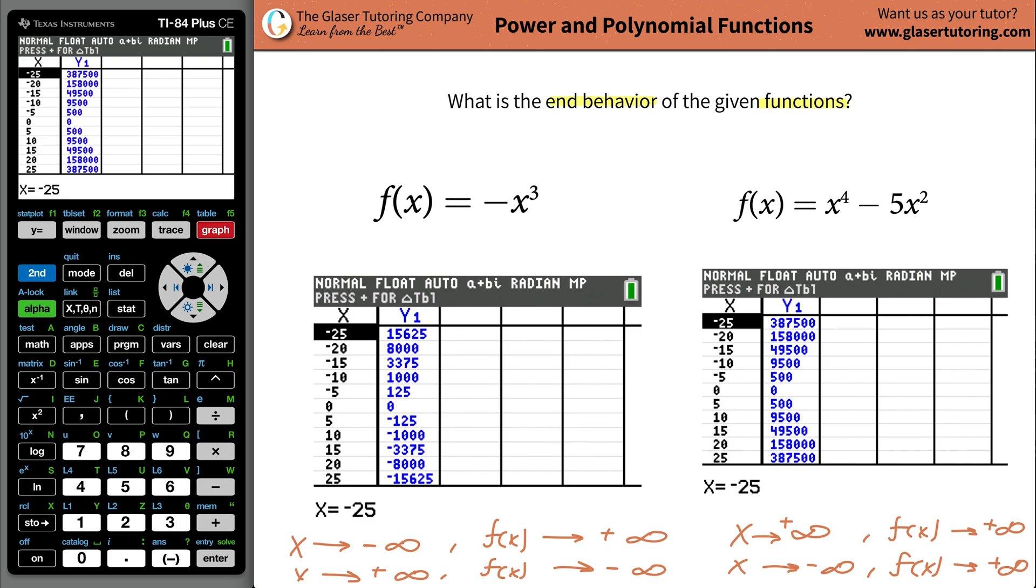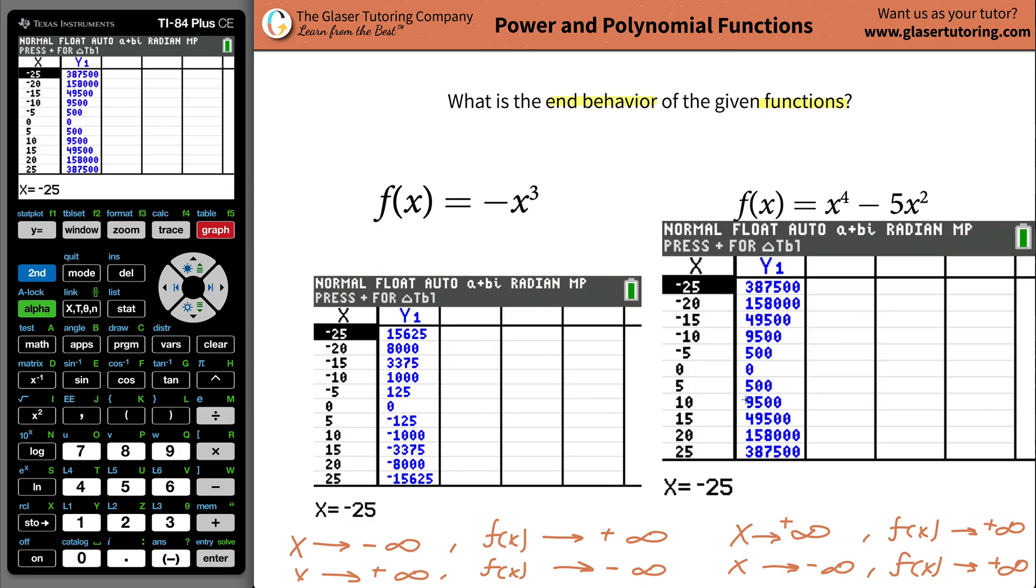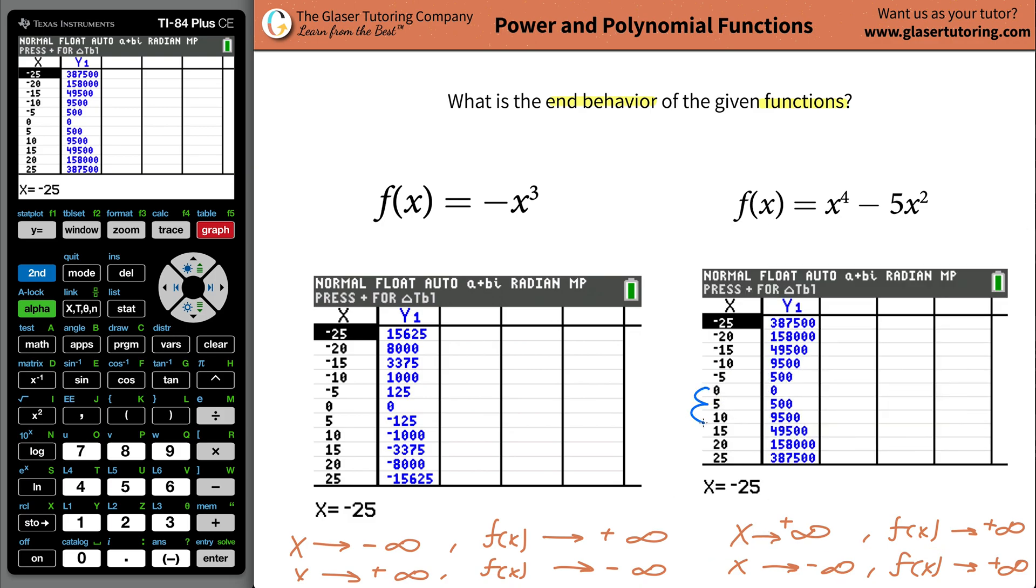So notice what's happening to the x terms, it's becoming more and more negative in this direction. As x is going to negative infinity, what's happening to the y values? Oh, wait a minute, it's going to positive infinity, huh? Isn't that what we said over here? It's exactly what we said down here, ladies and gentlemen. And then the other way. As x gets bigger and bigger in the positive direction, what's happening to the y's? It's also going to positive infinity, that's what we said already.